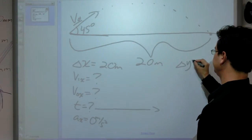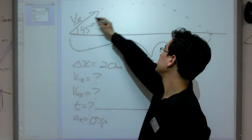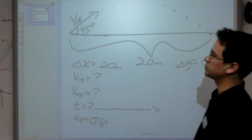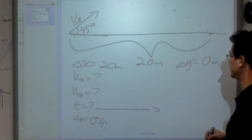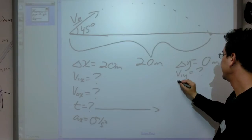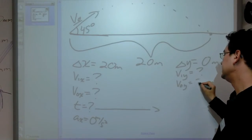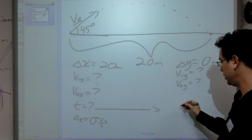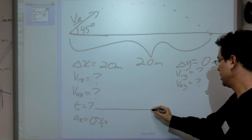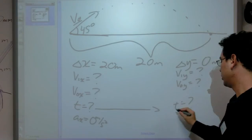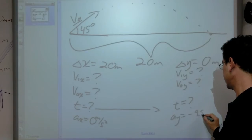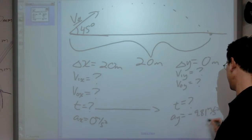Let's see what we've got in the y. Our total displacement is zero meters — the ball comes back down to the ground, starts at 0, ends at 0. Our final velocity in the y, don't know. Initial velocity in the y, not certain, but maybe we can learn something about it. If we can find that and our initial velocity in the x, we should be able to find our answer. Time we don't know, but that's our bridge between the two. Acceleration in the y, since we're near the surface of the earth, is negative 9.81 meters per second squared.